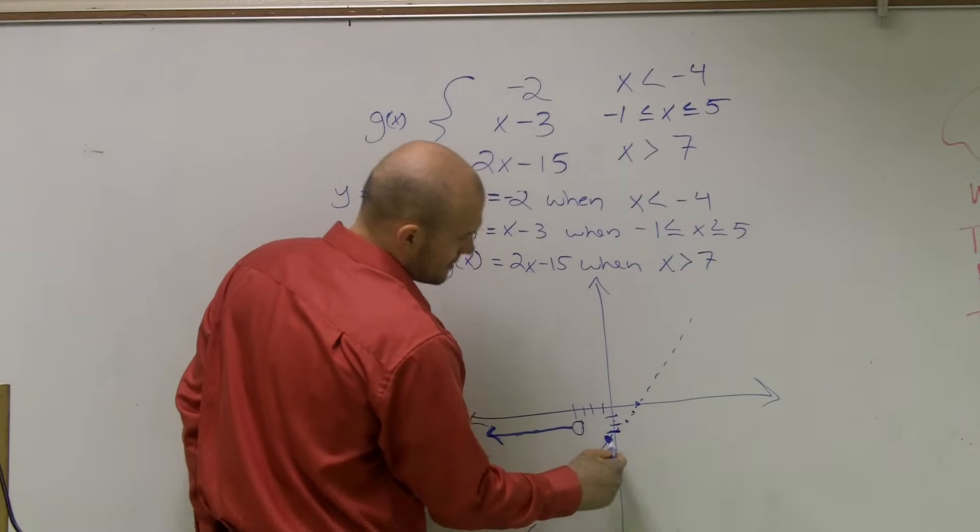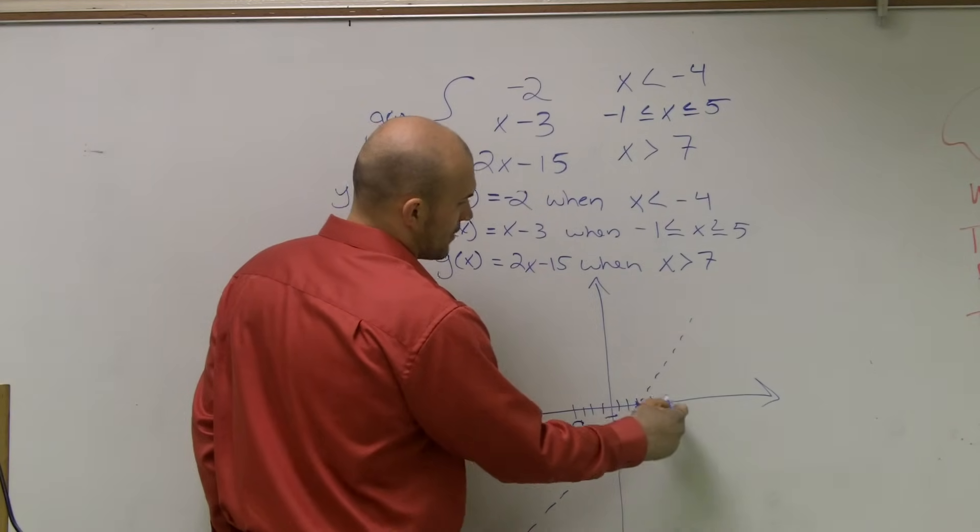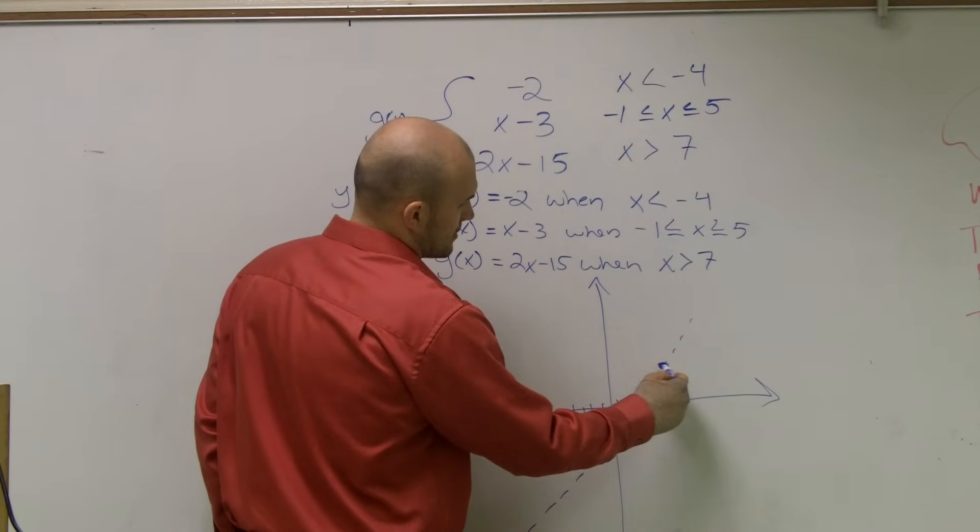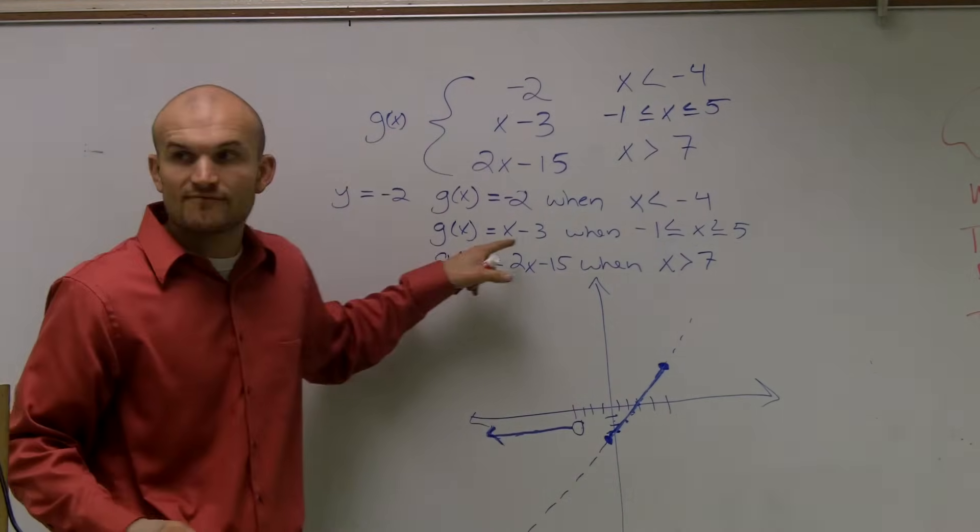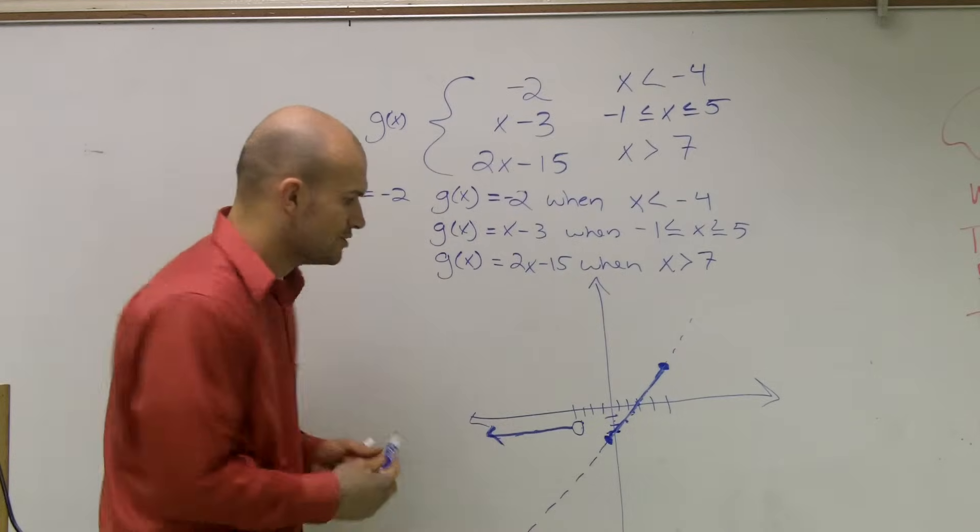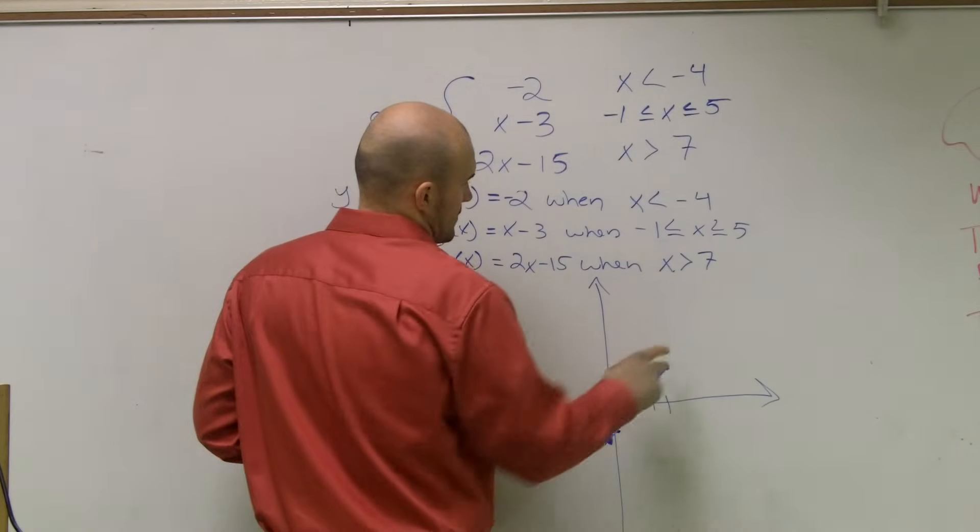Less than or equal to 1, 2, 3, 4, 5. So now, this graph is only true. So this function is only true between these two points.